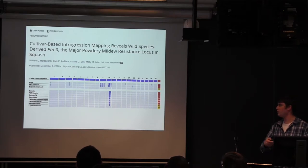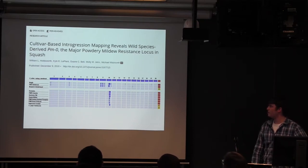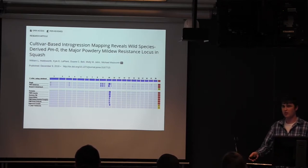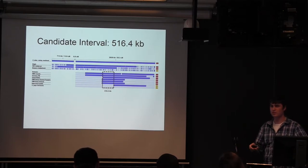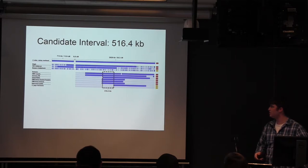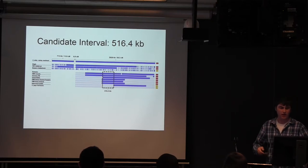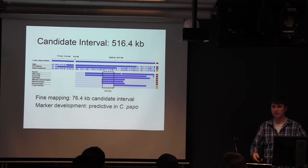Now I'm going to talk about powdery mildew resistance. We have mapped the major powdery mildew resistance gene present in most cultivars available today. We used an introgression mapping approach where we knew resistance came from one particular wild species in one introgression event. We found a candidate interval of about 500 KB that all resistant varieties shared and none of the susceptible varieties had. With additional fine mapping, we got that down to about 76 KB and developed a marker predictive in cucurbita pepo.